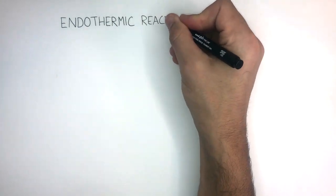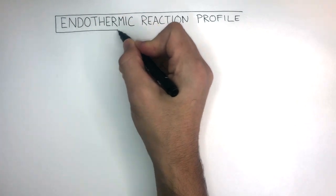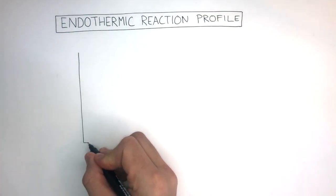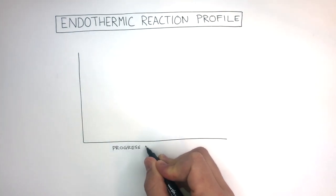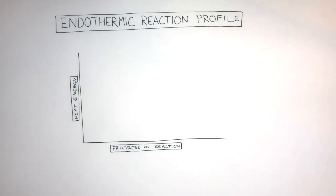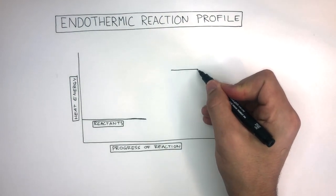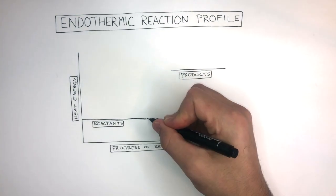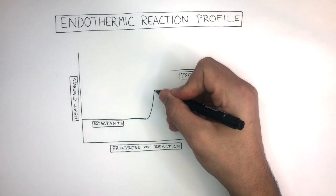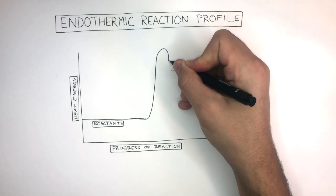An endothermic reaction profile explains how an endothermic reaction causes the temperature of the surroundings to decrease. Here I'm drawing the same axes: on the x-axis is the progress of reaction, and on the y-axis is heat energy. Just like the exothermic reaction profile, the first line represents the reactants and the second line represents the products. Here I'm drawing the activation energy, which goes up from the reactants, forms a hump above the products, and then goes back down to the products.